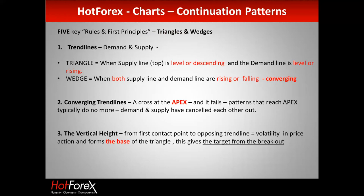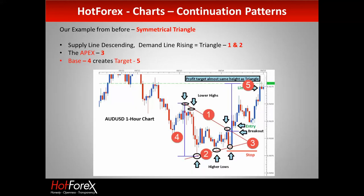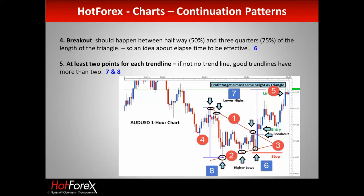To summarize the five key points: you need trend line support and supply; the trend lines converge to create the apex; the vertical height — the base — gives the potential target; you need at least two to three trend line touches; and the breakout should occur before 75% of the triangle is complete. If the break occurred after 75% of the distance, the significance is weaker. The target is the base, typically within a few pips.